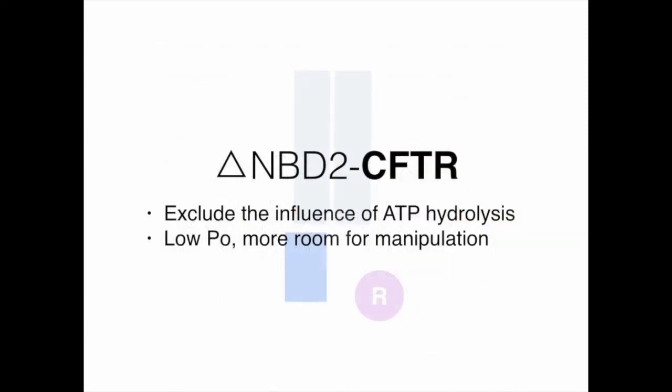To test our idea, ΔNBD2 CFTR was chosen for two reasons. First, the removal of ATP binding and NBD dimerization from the gating scheme simplifies our data interpretation. Especially once ATP hydrolysis is taken out of the equation, CFTR gating can be treated as conformational transitions in equilibrium. Second, the extremely low open probability of this mutant CFTR provides a much wider room for the manipulation of PO.